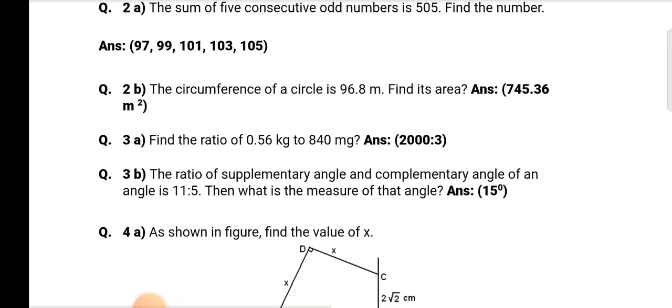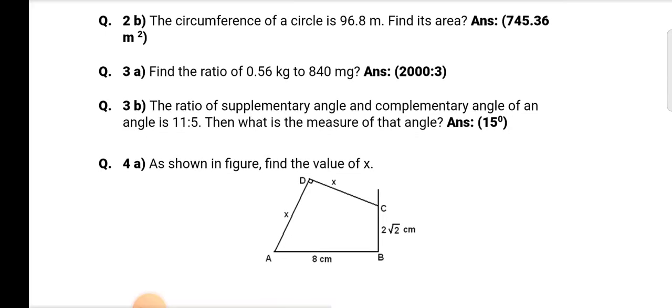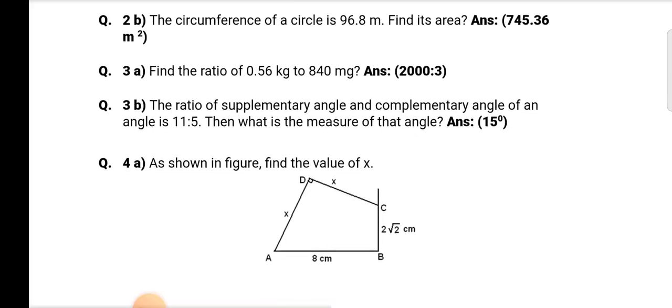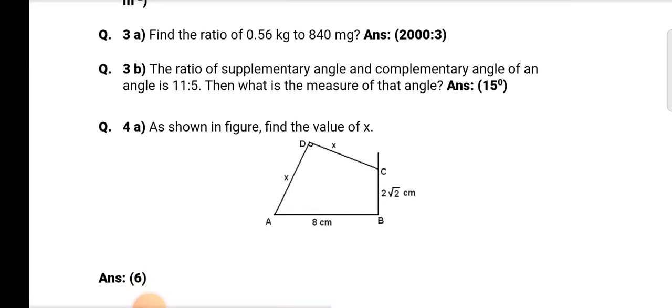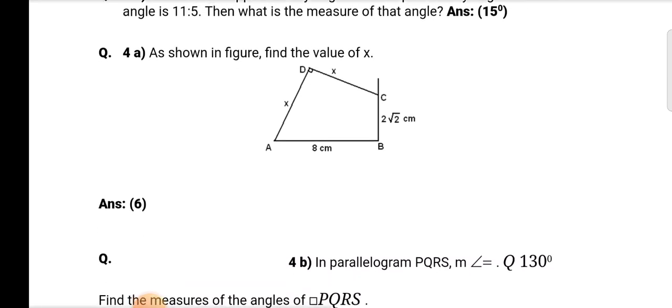Question 3a: Find the ratio of 0.56 kg to 840 mg. Answer: 2000 is to 3. Question 3b: The ratio of supplementary angle and complementary angle of an angle is 11 is to 5. Then what is the measure of that angle? Answer is 15 degrees.